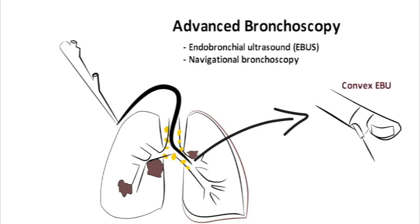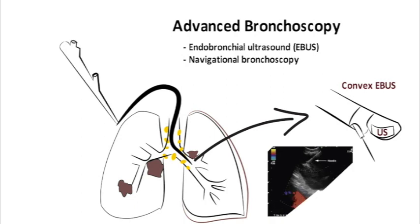The convex EBUS probe is built into the tip of the bronchoscope. Just like the standard scope, the EBUS scope also has a light, a camera, and a working channel. However, the ultrasound on the EBUS scope allows the bronchoscopist to identify structures outside the airway, such as masses in the mediastinum and lung parenchyma, and the lymph nodes that run along the airways, facilitating real-time, ultrasound-guided needle biopsies through the working channel of the scope.